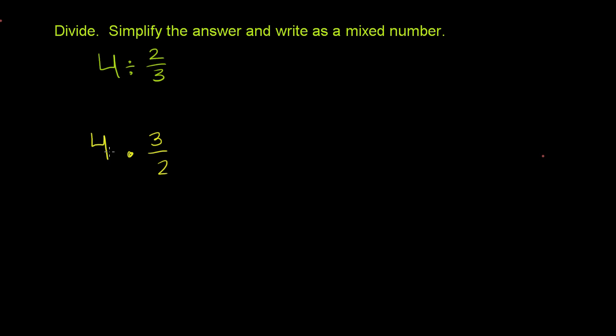Now, we've seen this before. We know how to multiply fractions. You multiply the numerators times each other and the denominator times each other. But 4 doesn't look like a fraction. But you always have to remember a whole number can be written as that same whole number over 1. 4 is the same thing as 4 over 1.